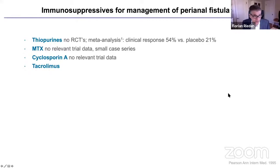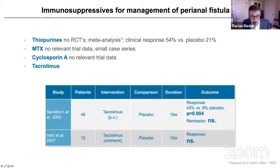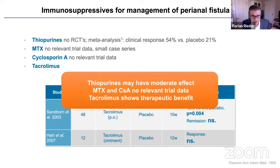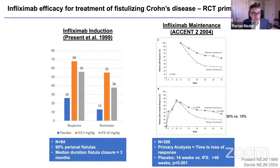For immunosuppressors in perianal disease: for thiopurines, there are no randomized controlled trials, but a meta-analysis suggests increased clinical response over placebo. For methotrexate, no relevant trial data, only small case series. Cyclosporin also has no relevant trial data. Tacrolimus has only short-term randomized controlled trial data over 10 weeks showing improved response over placebo. In summary, thiopurines may have a moderate effect, there is really no data for methotrexate and cyclosporin, and tacrolimus shows therapeutic benefit with long-term data missing.